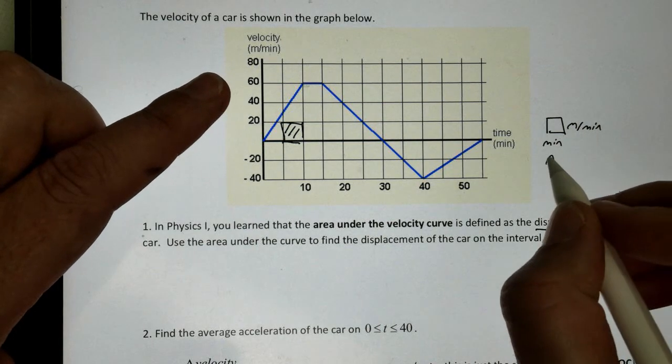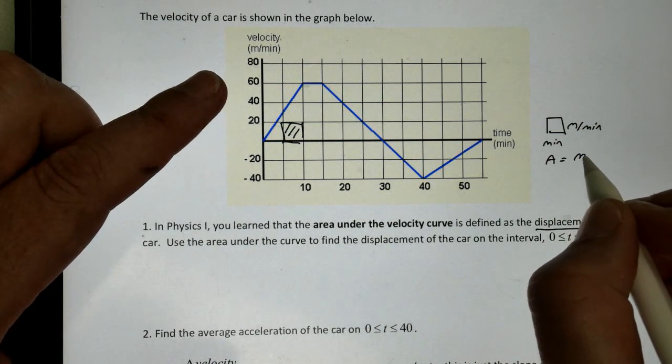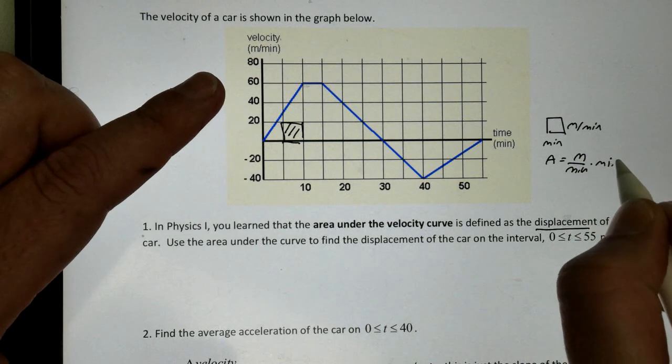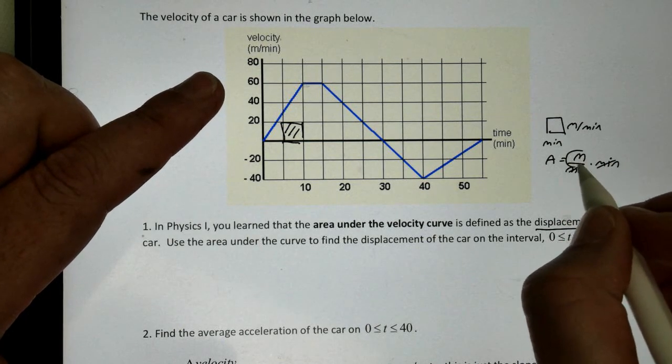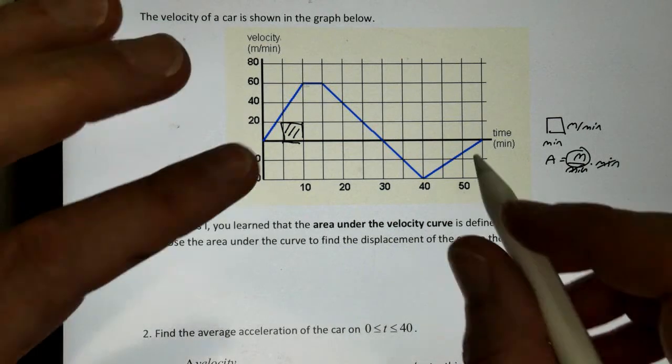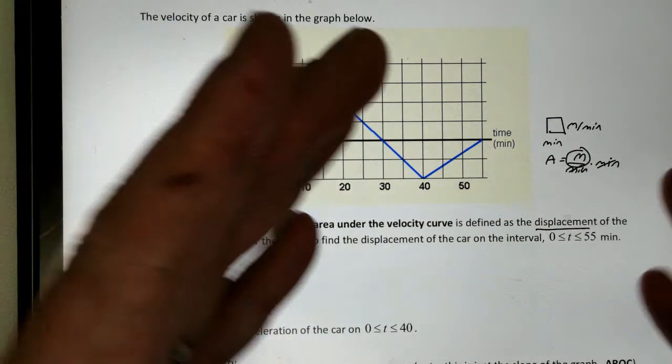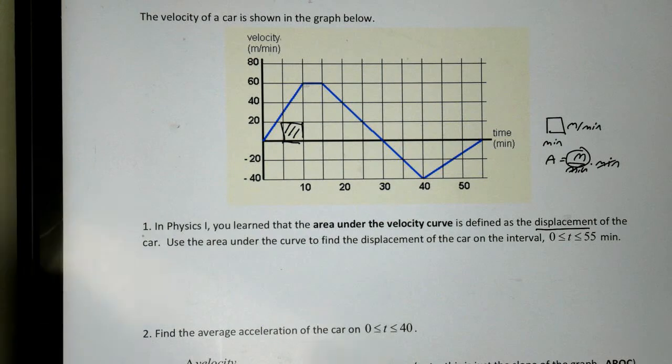If I try to find that area, I'm going to take that meters per minute, multiply it by minute. Those cancel and I'm left with meters here. So I know the area under here is going to give me meters or my displacement.